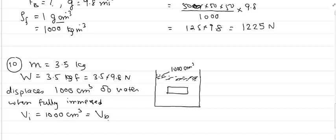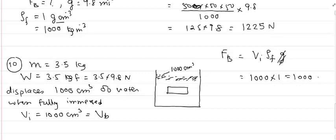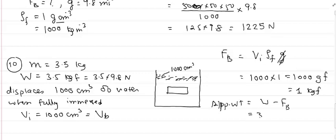Volume of the body = 1000 cm³. Upthrust FB = VI × ρF = 1000 × 1 = 1000 gf = 1 kgf. Apparent weight = W − FB = 3.5 kgf − 1 kgf = 2.5 kgf. So the apparent weight of the body when fully immersed in water is 2.5 kgf.